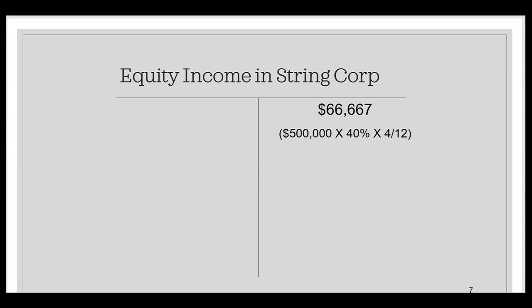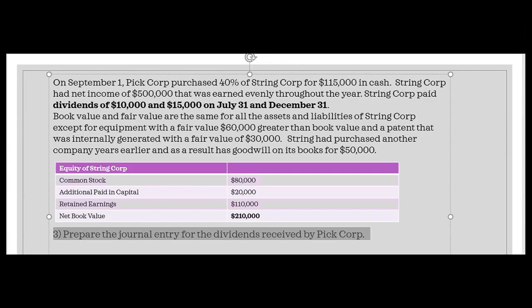In the T-account for Investment in Stringcorp, we had the initial $115,000 at acquisition; now we add $66,667, increasing the asset balance. Also set up a T-account for Equity Income in Stringcorp — that income statement account is credited $66,667. Question three asks for the journal entry for dividends received by Piccorp. There were two dividends: $10,000 on July 31st and $15,000 on December 31st.